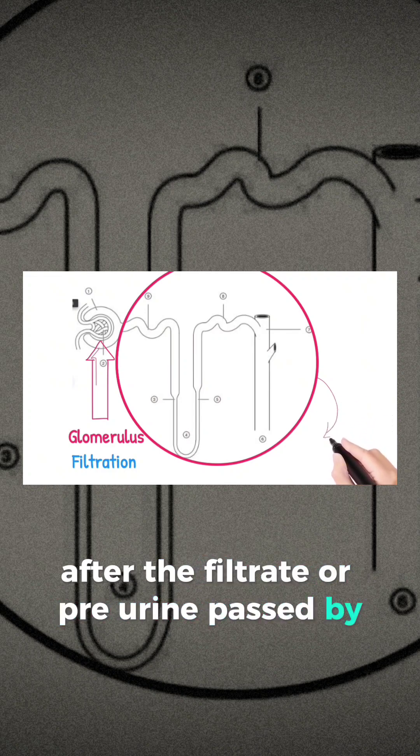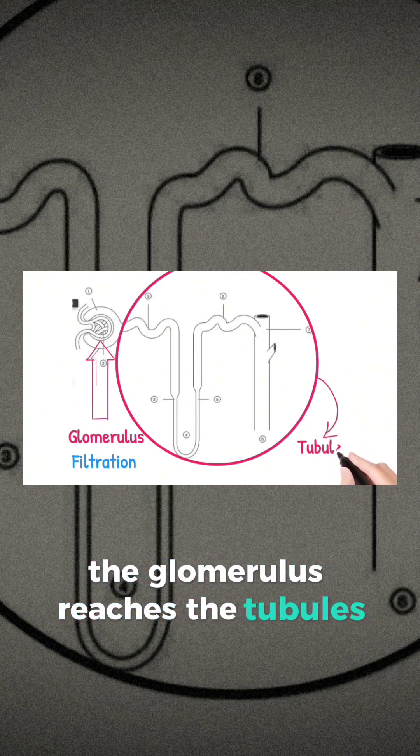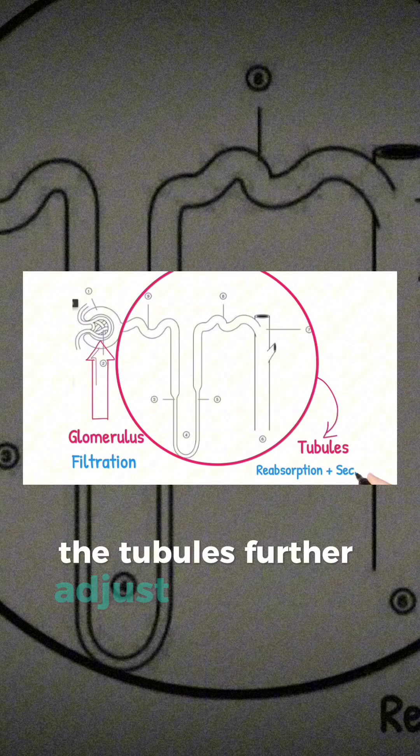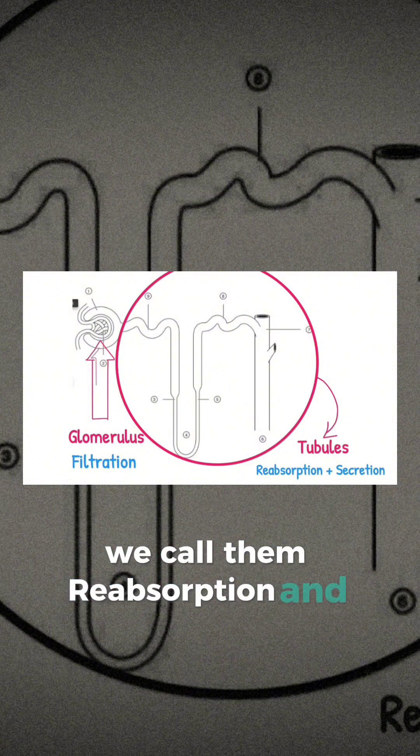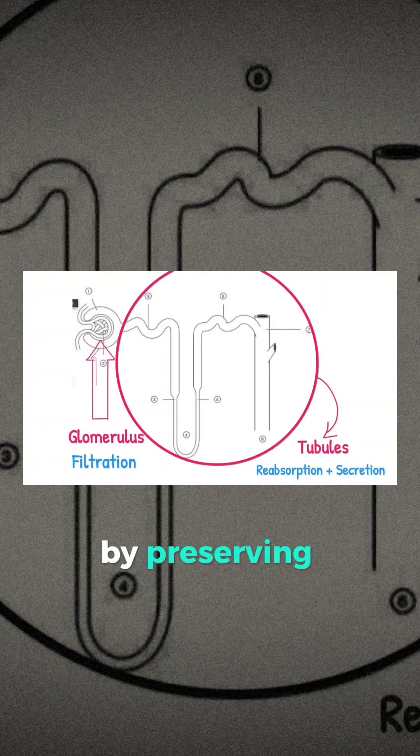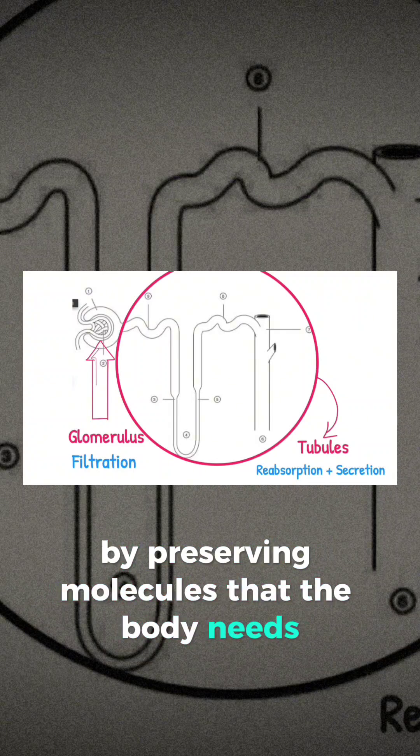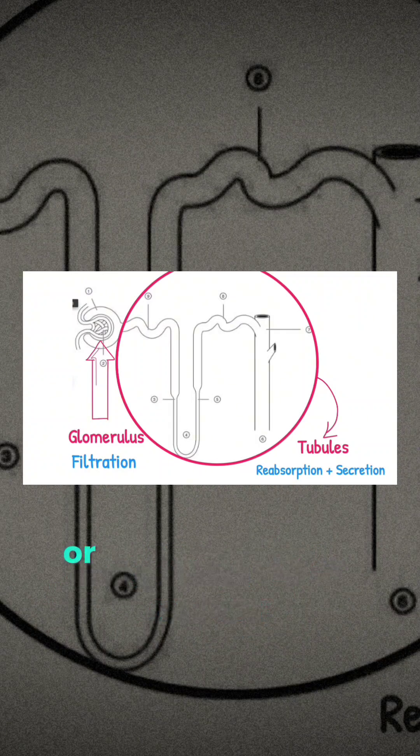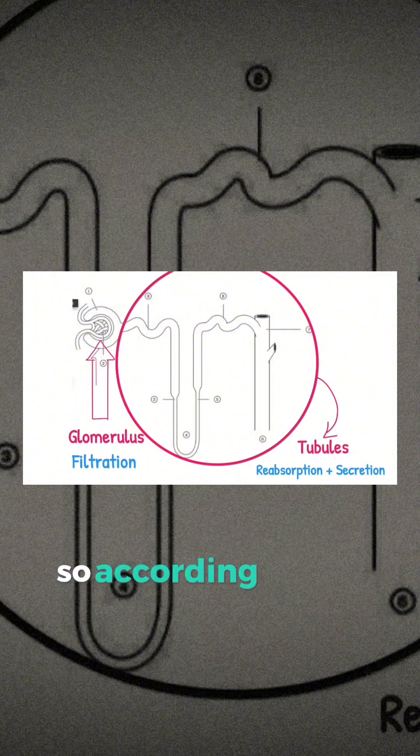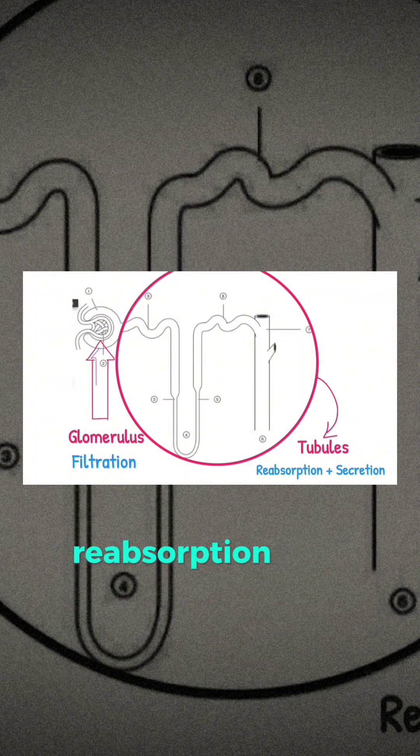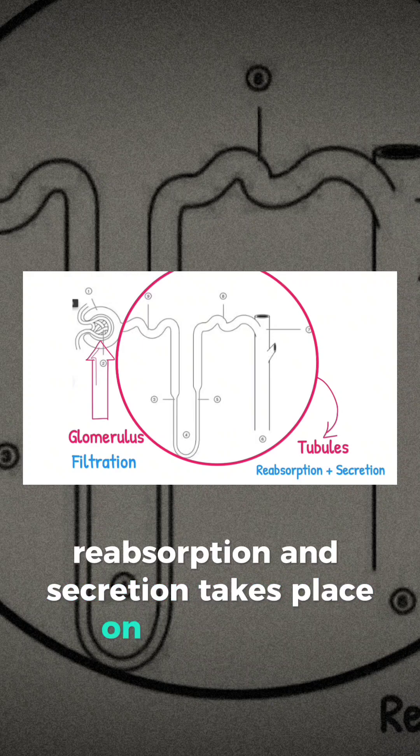The tubules further adjust the fluid by two processes called reabsorption and secretion, preserving molecules that the body needs and getting rid of excess or toxic molecules that the body wants to eliminate. According to the body's needs, reabsorption and secretion take place in the tubules.